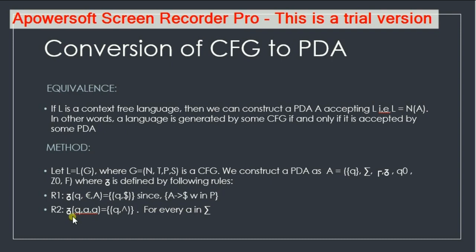According to rule 2, delta equals Q, epsilon, where the top of the stack and the input symbol are the same — then we can pop out the top element from the stack. Now let us see the implementation of these two rules through an example.